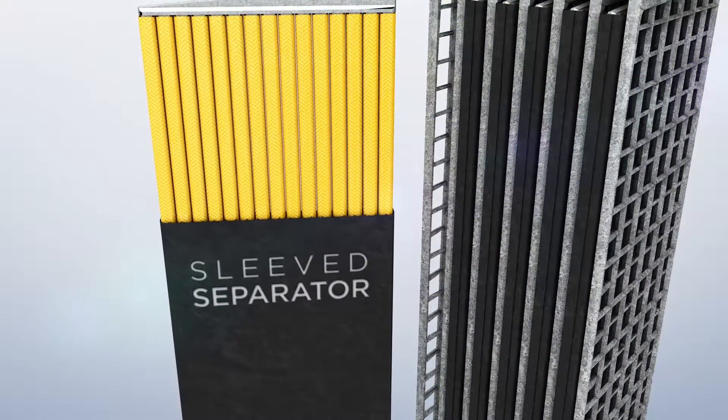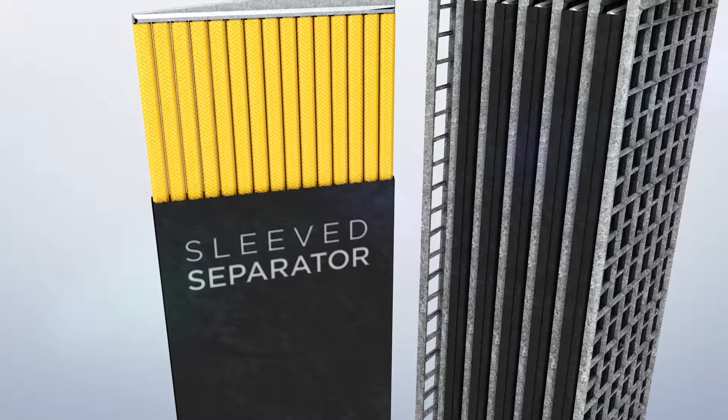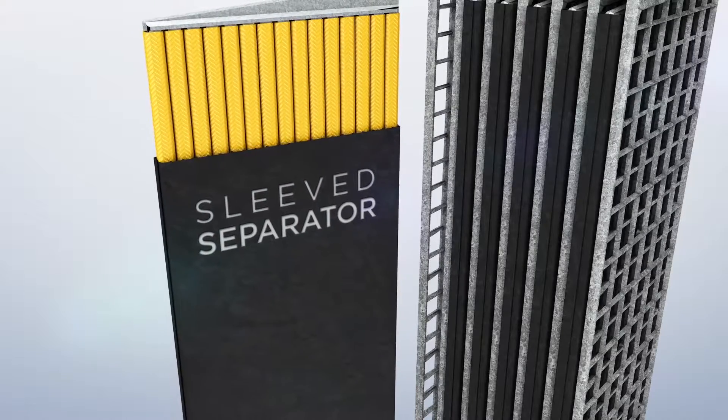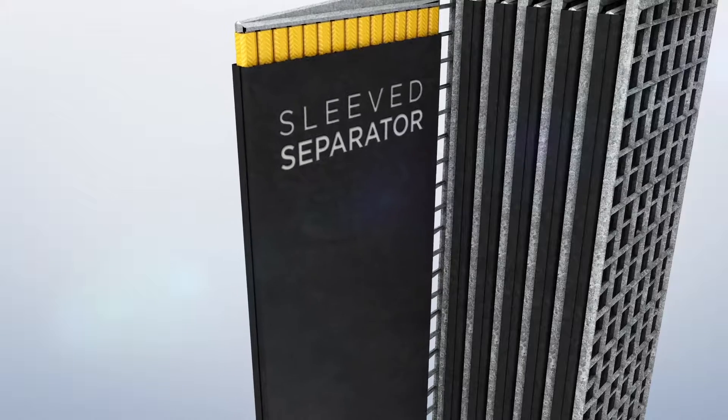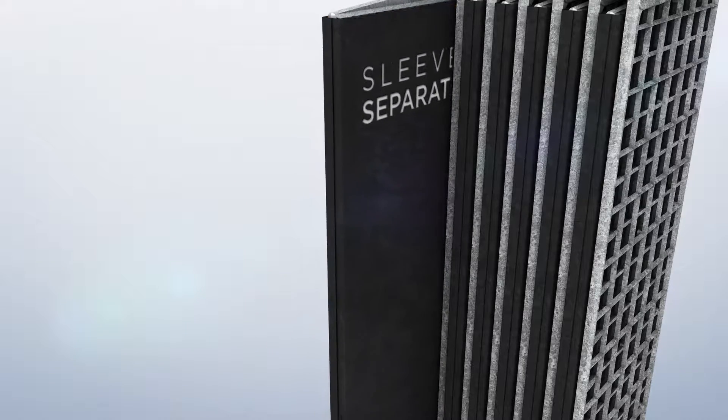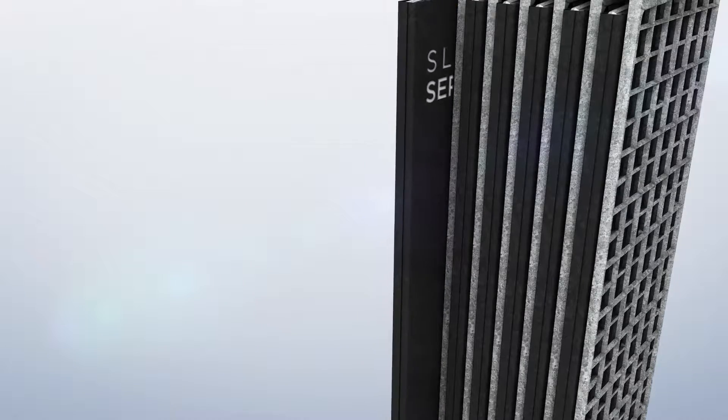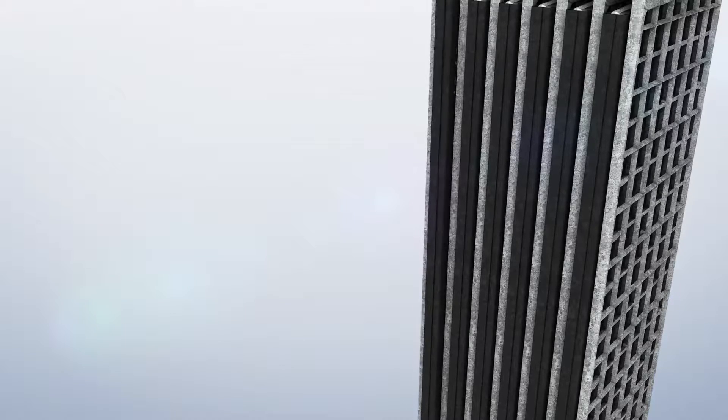A full sleeve encases the positive plate to eliminate shorts and potential problems with misalignment. The sleeve also prevents shorts between the sides of the plate, and the unique back-rib design increases electrolyte flow and maximizes contact with the negative plate.